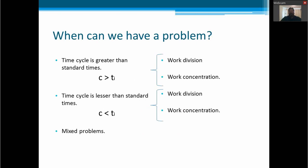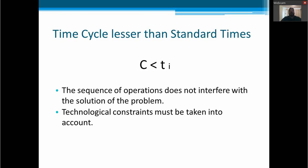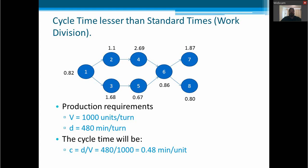This was the example when the cycle time is greater than the time of each task. Now we are going to analyze the case where the cycle time is less than the standard times. In this case, the sequence of operations does not interfere with the solution of the problem, but the technological constraints must be taken into account. We have these eight tasks in this workflow.